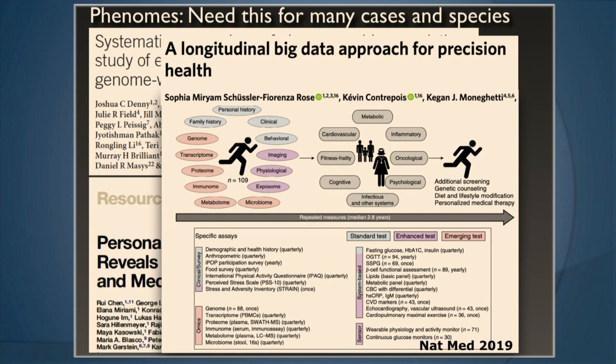There are hardcore limitations to what you can do with n of one human beings. Fortunately for us, there aren't with mice, rats, C. elegans, Drosophila, and yeast. So we can proof this longitudinal big data approach to precision medicine using animal models of various sorts, and that's what we've been doing.